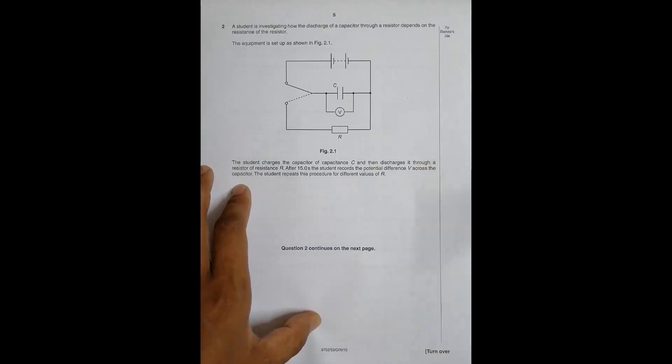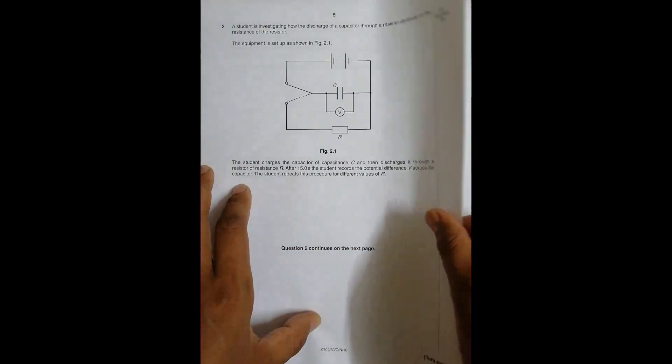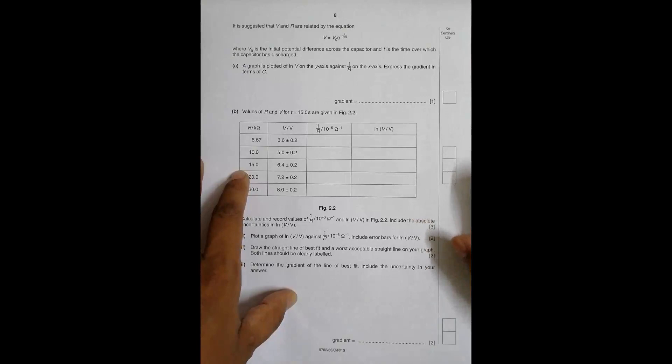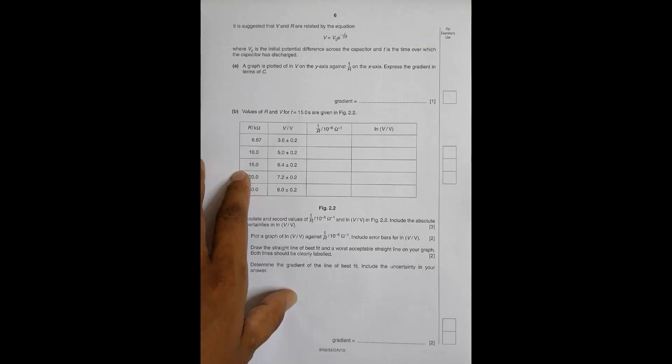The student charges the capacitor of capacitance C and then discharges it through a resistor of resistance R. After 15.0 seconds, the student records the potential difference V across the capacitor, and repeats this process for different values of R. V and R are related by the equation V = V₀ e^(−t/CR), where V₀ is the initial potential difference across the capacitor and t is the time of discharge — here t = 15.0 s. Part (a): a graph is plotted of ln V on the y-axis against 1/R on the x-axis. Express the gradient in terms of C.